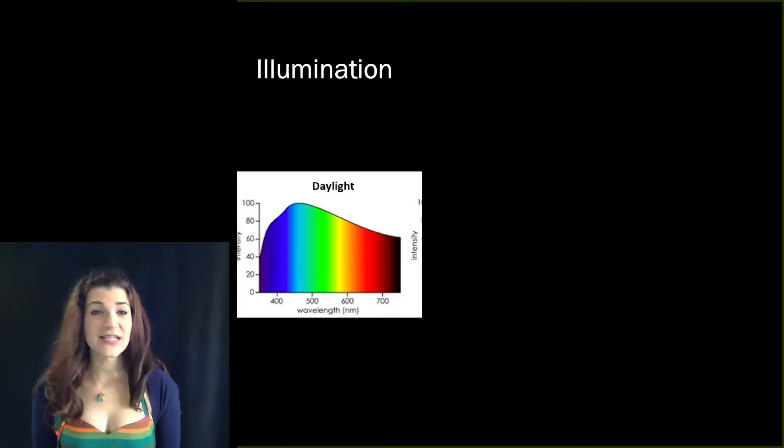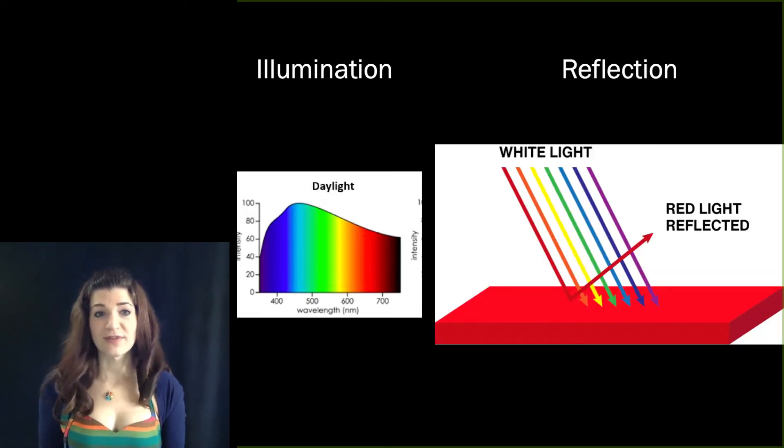Now, as you read, the colors that objects appear are in part a function of illumination. Is the light daylight or an LED light bulb, for instance? It's also a function of the wavelengths of light that they absorb or reflect.